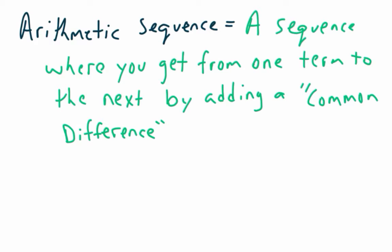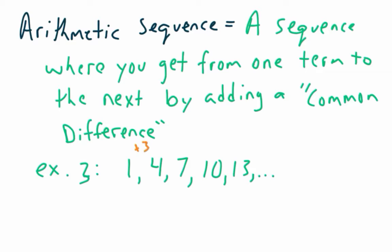A couple of examples of this type of sequence. Example three: if my first number is 1, my second number is 4, my third number — if it's arithmetic — must be 7, because every time I'm adding 3. That common difference is 3, so every time you get from one number to the next, you add 3.